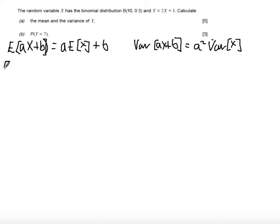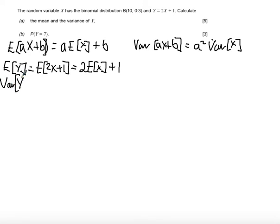So the expectation of Y equals the expectation of 2X plus 1, which equals 2 times the expectation of X plus 1. Now the variance of Y will be the variance of 2X plus 1.